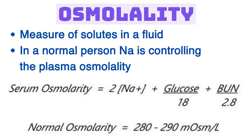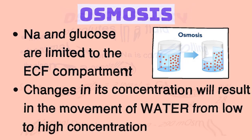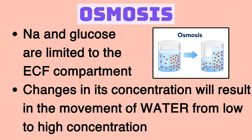Two of the three osmolality components — sodium and glucose — are limited to the ECF compartment. Urea can equilibrate between ECF and ICF, so there's an equal amount on both sides. Because sodium and glucose are limited to ECF, changes in their concentration cause movement of water by osmosis. Which way does water move in osmosis? From low concentration to high concentration — just the opposite of diffusion.